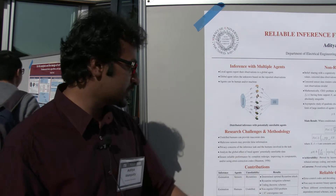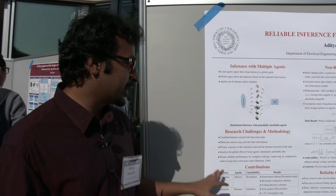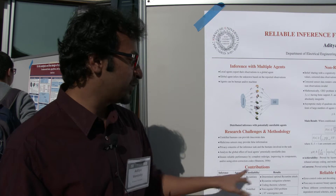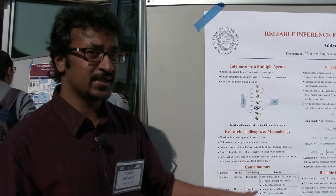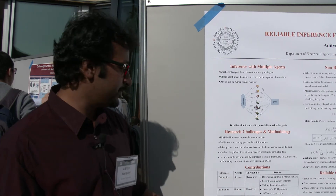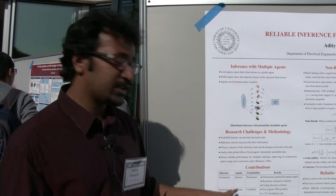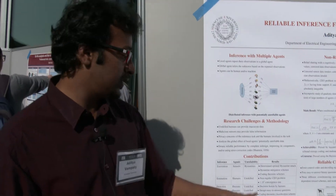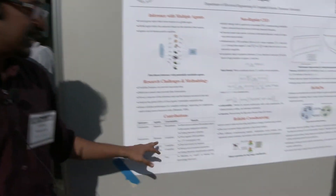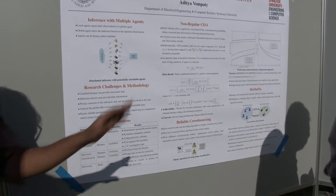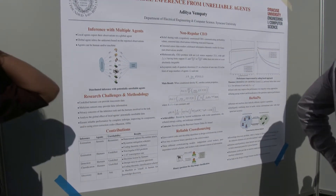This is a general contribution list. We actually did it for the case when there are only sensors with unreliabilities due to Byzantines — that's an estimation problem. We also did estimation where humans are involved and they're unskilled, and similarly we had other results. Today I'm going to focus on only a few of those.